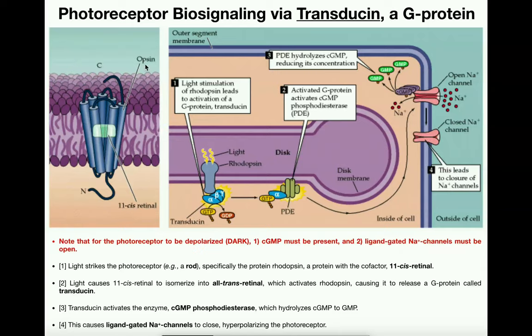So we'll call it rhodopsin from here on out. Rhodopsin is associated with some G proteins. There are three subunits of a G protein: alpha, beta, and gamma. Alpha is really the only one we care about. The alpha subunit of this G protein has a special name — it's called transducin.